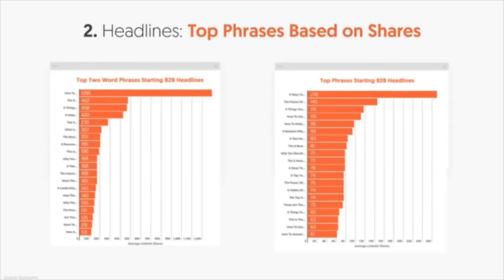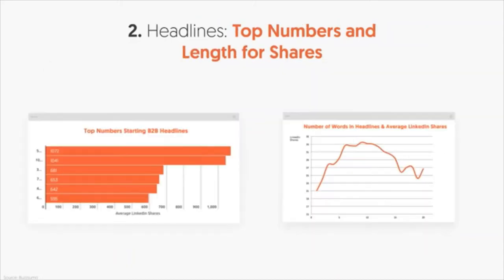According to BuzzSumo, when looking at two-word phrases, 'how-to' generates more shares than any other two-word phrase. When starting your headline, 'X Ways To' tends to do best, where X is replaced with a number like 5, 10, 15, or 20. The numbers five and ten also do really well. For headline length, aim for roughly six to ten words — too long and you get very few shares, too short and shares drop off too.